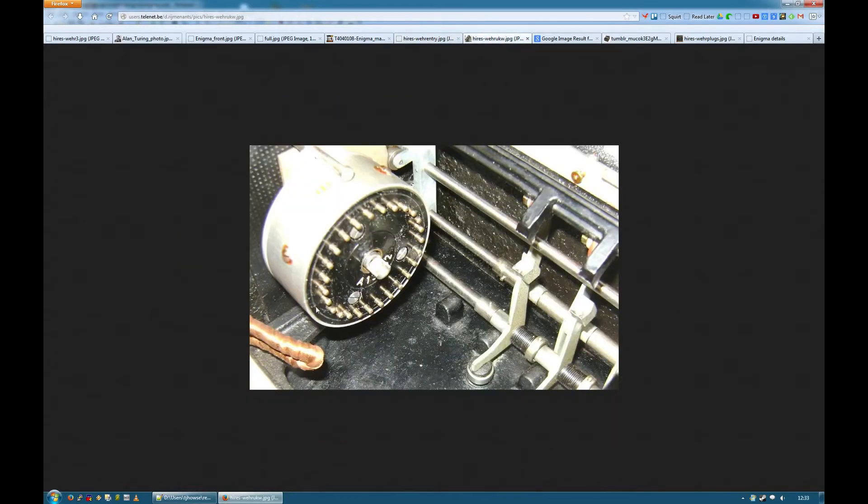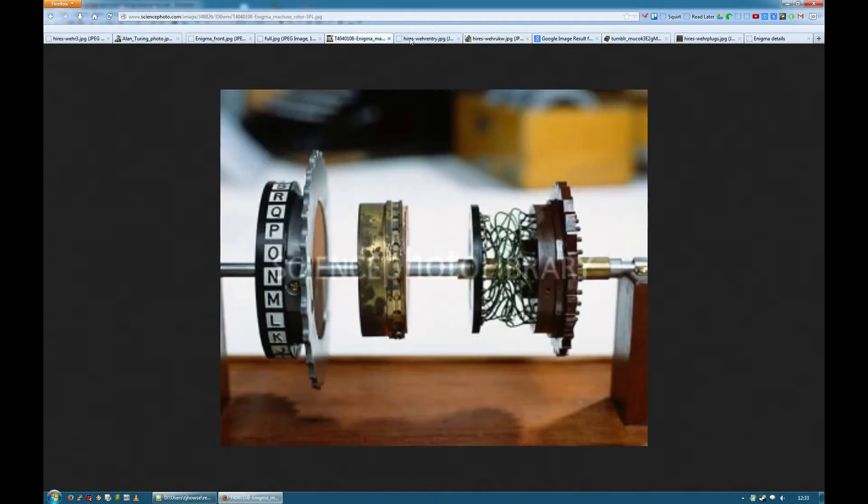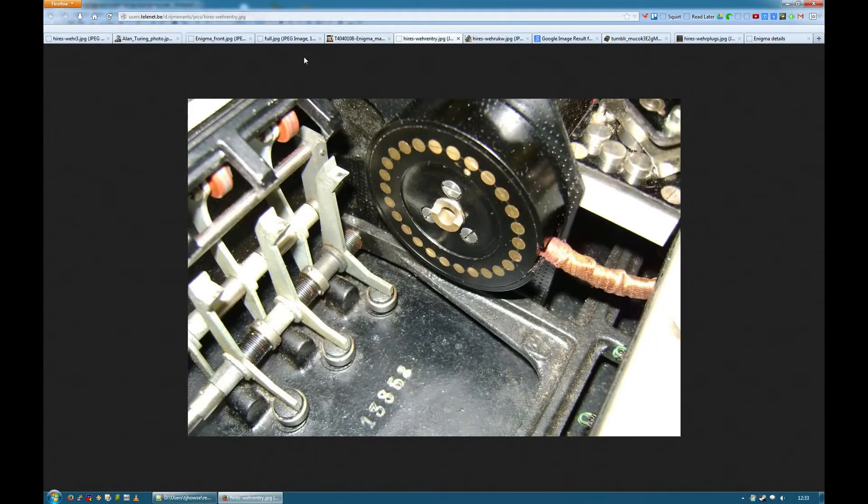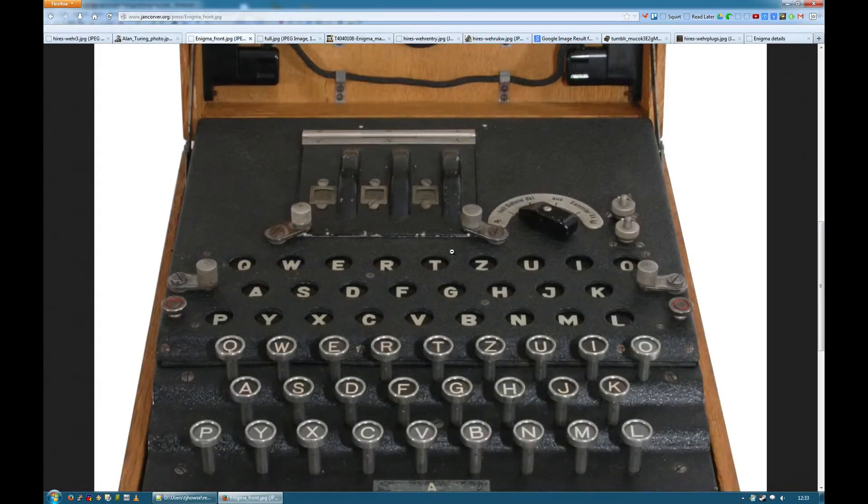So it goes through three or four rotors, hits the left hand side. And all this does is reflect the signal and send it back through the rotors a second time. Goes back through all the scrambling in the reverse direction, hits this side, and then goes through to the lamps.